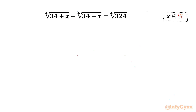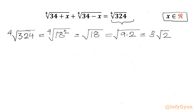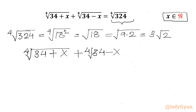Let's get started with our RHS. It is the 4th root of 324, which we can write as the 4th root of 18 squared, which equals the square root of 18, which equals the square root of 9 times 2, which equals 3 root 2. So let us replace the RHS by writing 3 root 2. Our equation becomes: 4th root of (34 plus x) plus 4th root of (34 minus x) equals 3 times square root of 2.